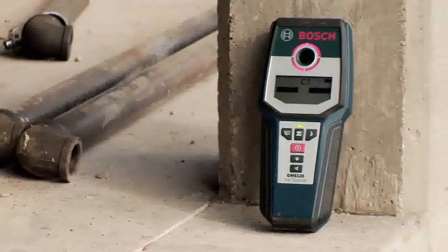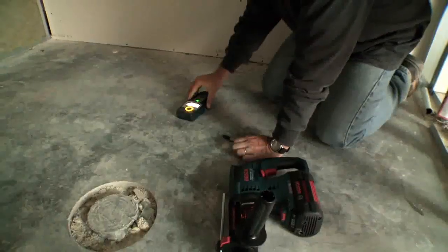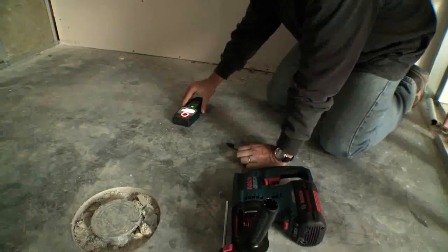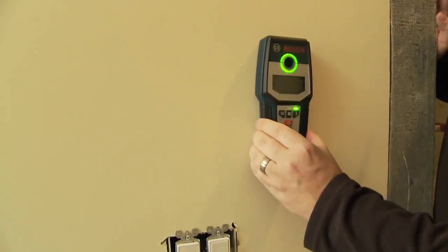This is the Bosch GMS-120 wall scanner that is used for interior detection of wood, metal, and electrical wires in floors and walls.